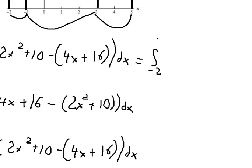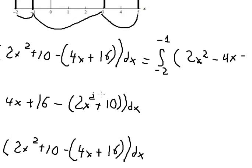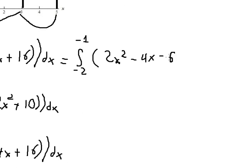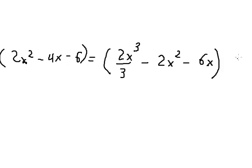For the first integral from negative two to negative one, we simplify: 2s² minus 4s plus 10 minus 16 gives us 2s² minus 4s minus 6. The antiderivative is: 2s³ over 3, minus 2s², minus 6s. We apply the boundary values from negative two to negative one.